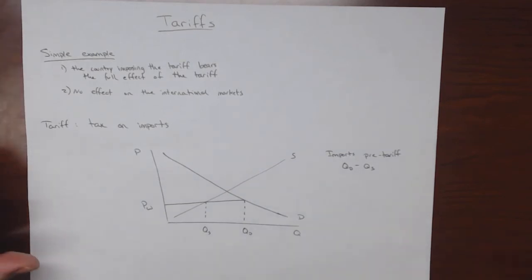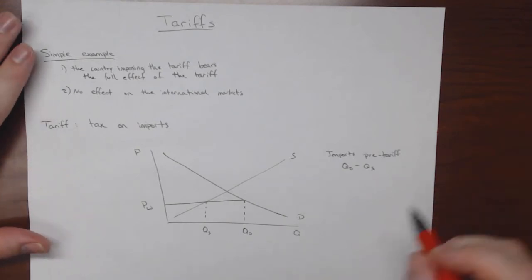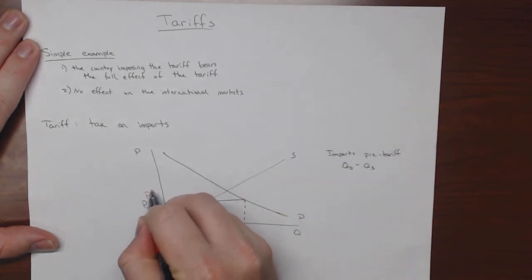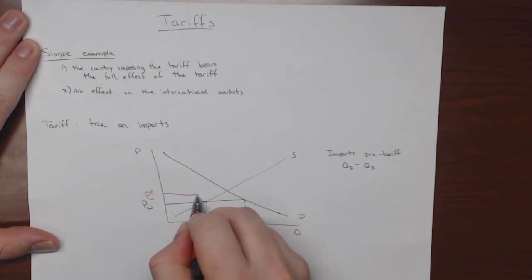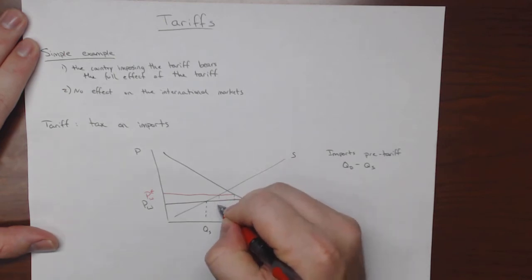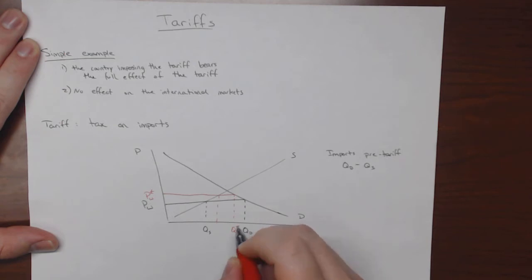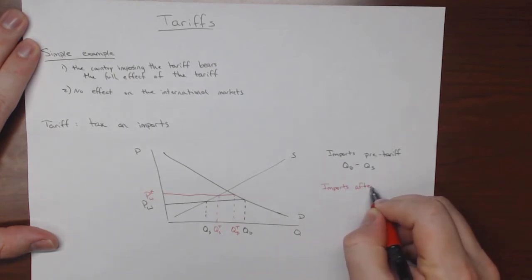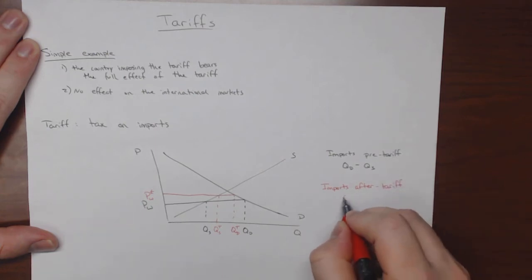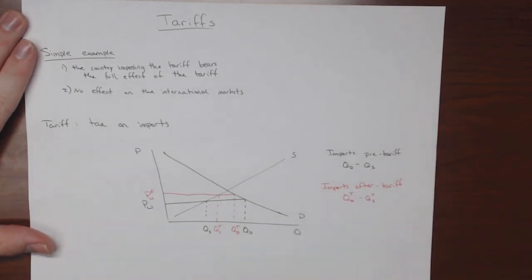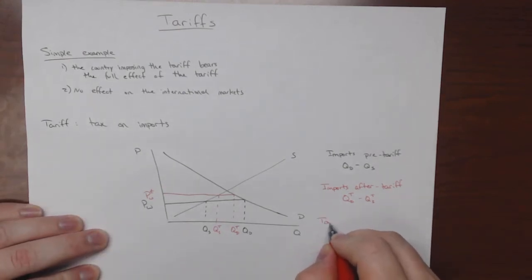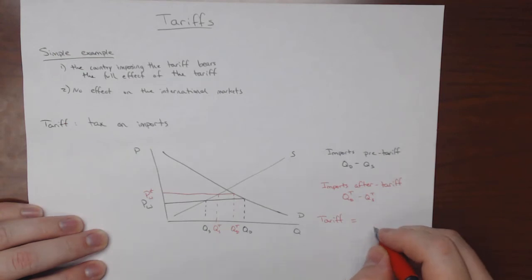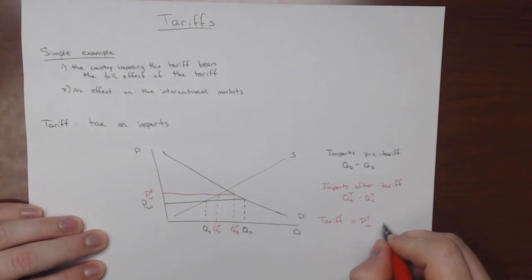imports pre-tariff are going to be equal to QD minus QS. Now let's pretend that we add in a tariff. What the tariff is going to do is it's going to raise the world price, but it's not going to affect the supply or demand curves. So all we do is we increase the world price in this domestic market by the amount of the tariff. I'll call these QDT and QST. And so imports after tariff are going to be equal to QDT minus QST. And the amount of the tariff is going to be equal to the difference between the after tariff price and the before tariff price. So it's going to be equal to PWT minus PW.